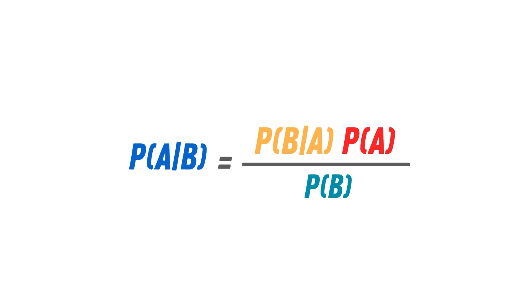This is the mathematical form, where the term on the left, p of b given a, is called the posterior, p of a is called the prior, which is the probability of occurrence of event a, p of b is known as the evidence, and p of b given a is known as the likelihood.